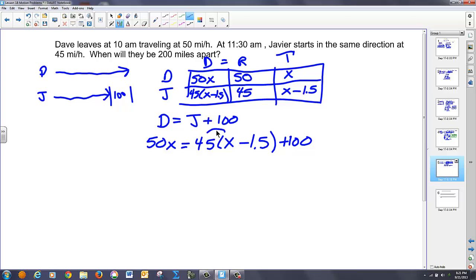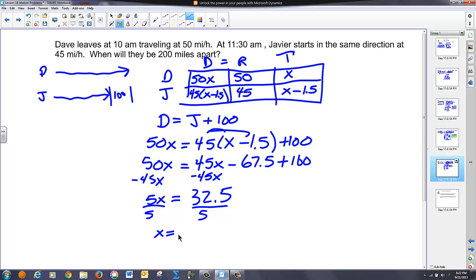Take and distribute 50X equaling 45X minus 45 times 1.5 is 67.5 plus 100. I'm going to subtract 45X from both sides, gives me 5X on the left and if I take 100 minus 67.5 I end up with 32.5. Divide both sides by 5 and I end up with 6.5 and once again that means X is 6.5 so that's a time that's an hour.